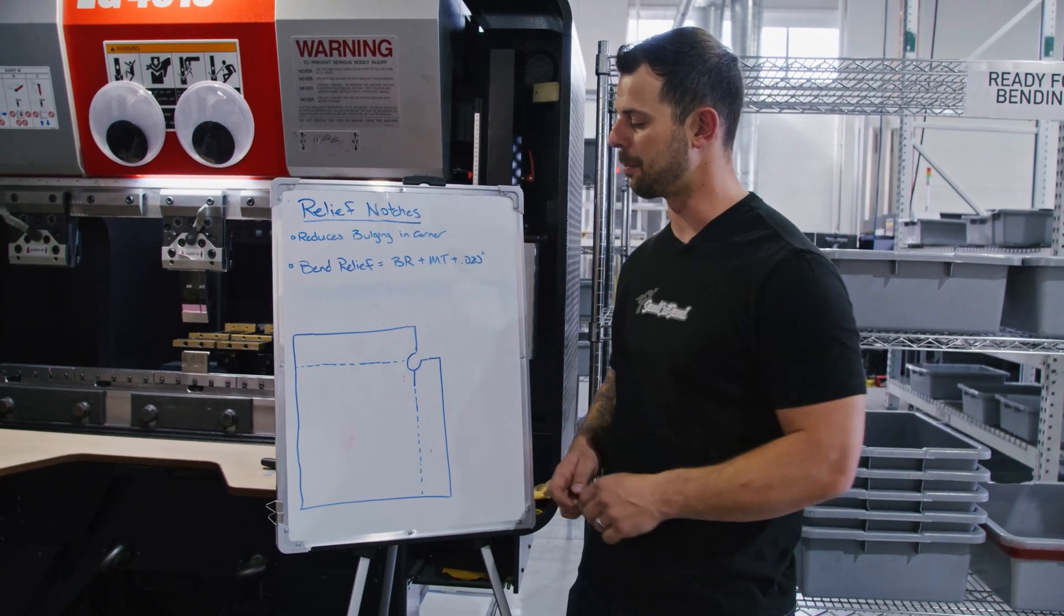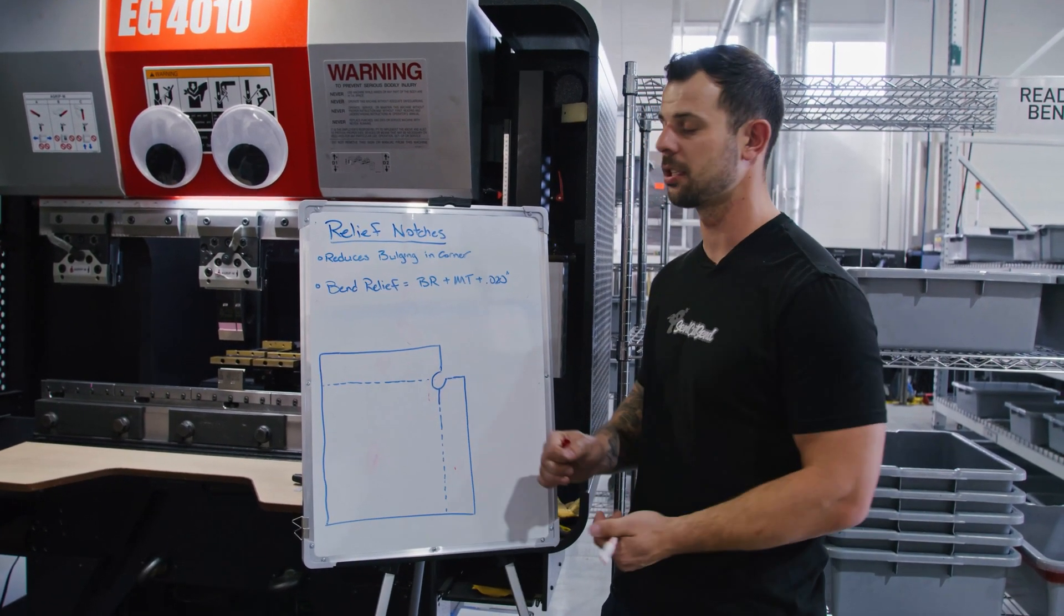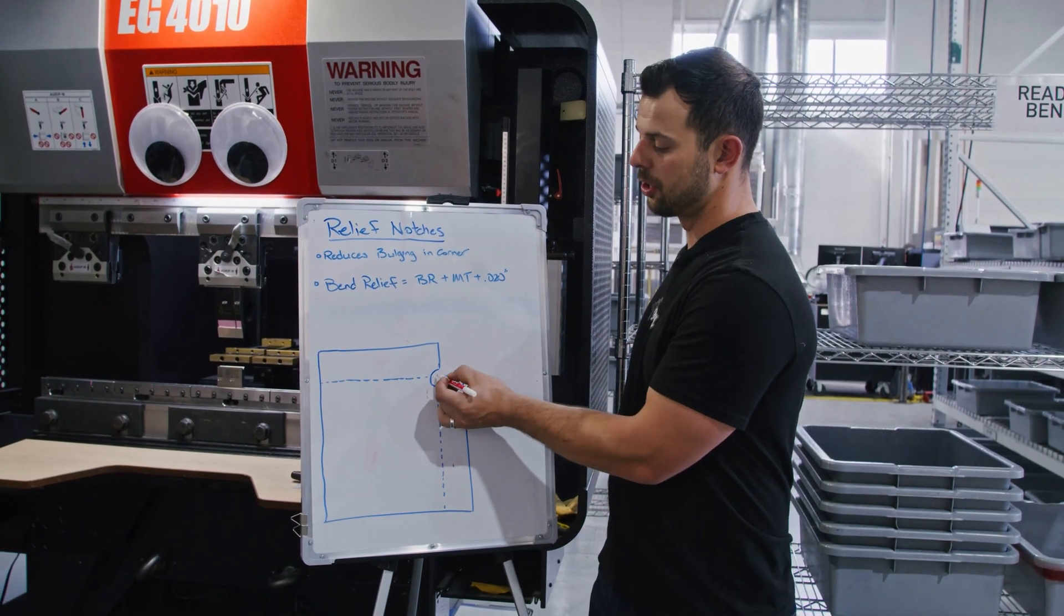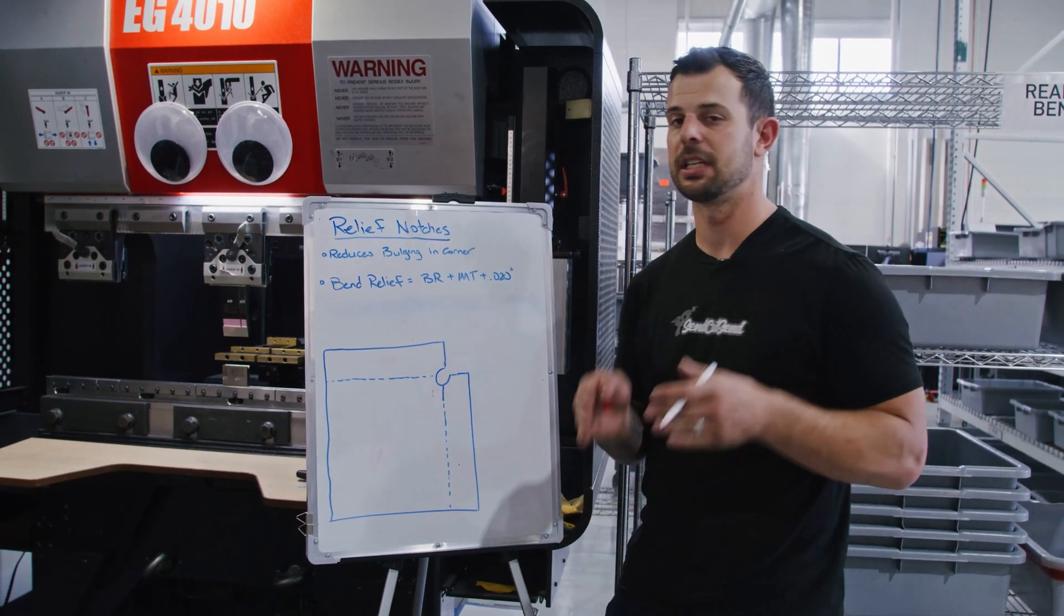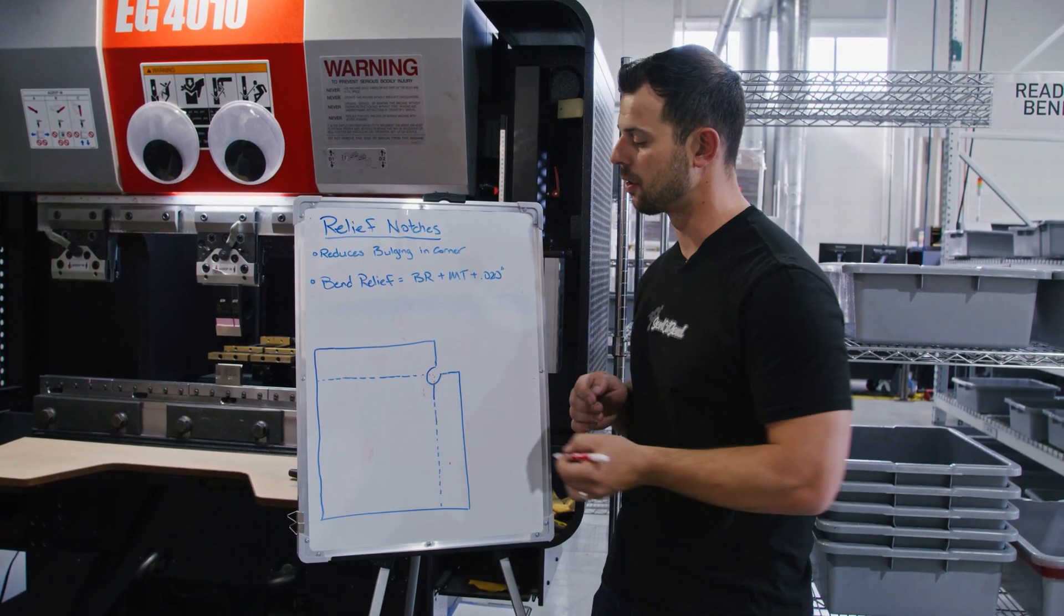So if we have say a bent part like this one right here, that we have a base flange and two return flanges being at 90 degrees to each other. But if we don't put in a relief in this area, we're going to see bulging in the corner at the intersection of those two bend lines.